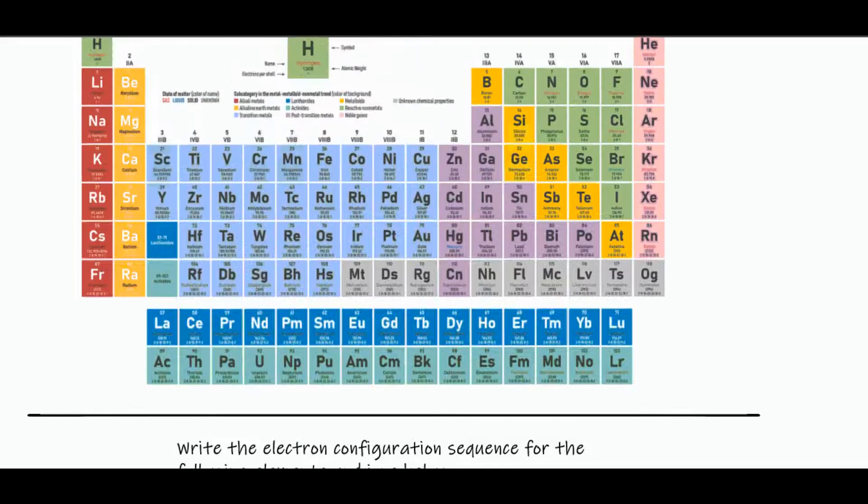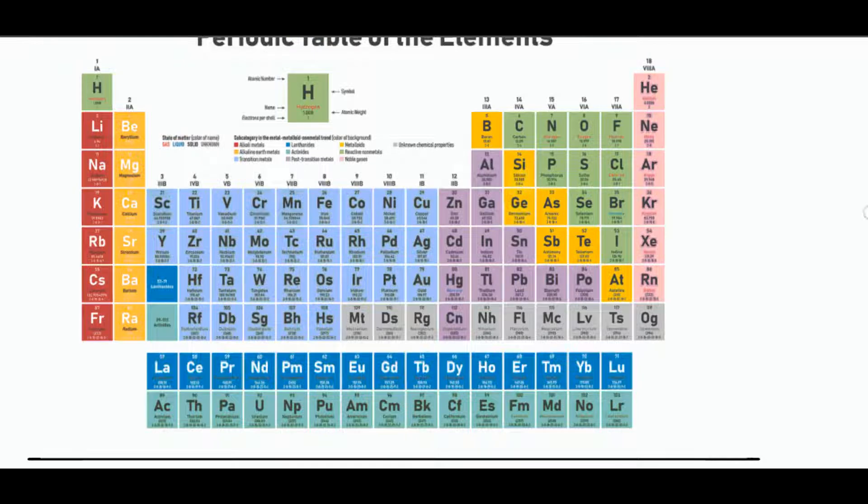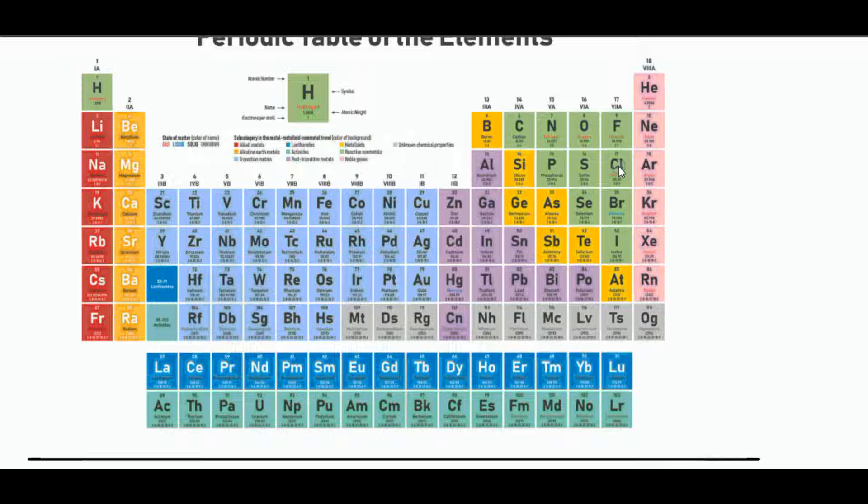So we go up and we look for tin is 50 electrons, chlorine is 17. If it's chloride, Cl minus 1, it's going to gain an electron. So it's actually 18 electrons.